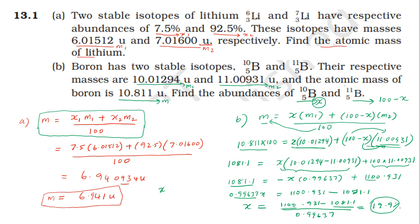So X is approximately 19.9 percentage. Therefore the abundance of boron-10 is 19.9%.